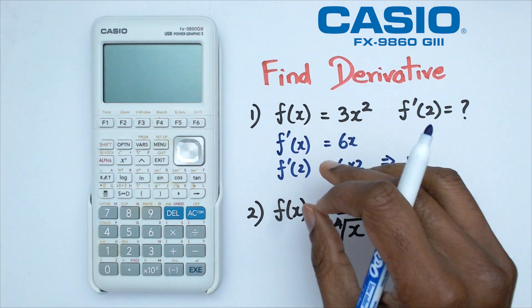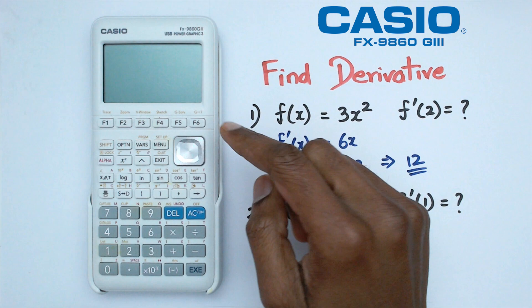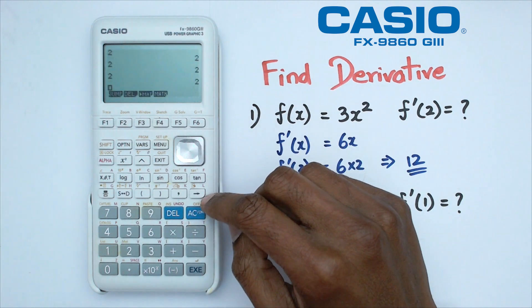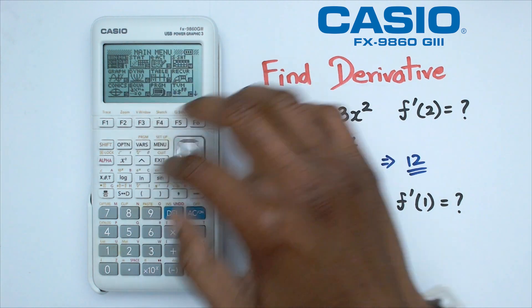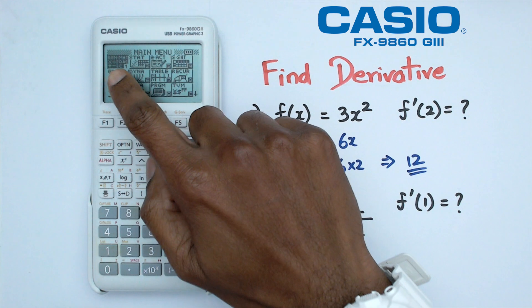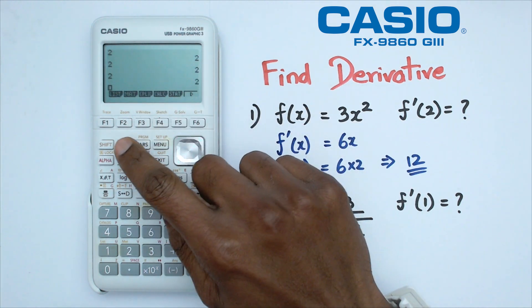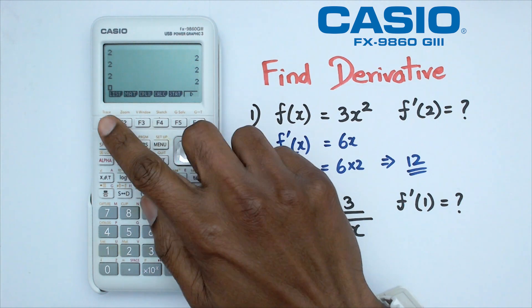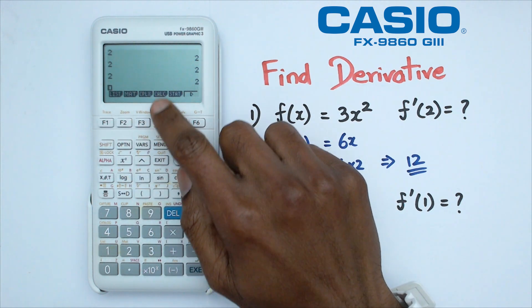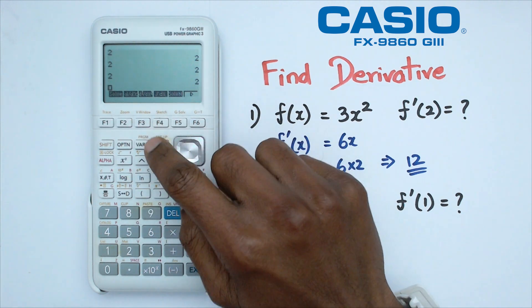But how do we do this in the calculator real quickly? So the way we're going to do this is we're going to switch on the calculator. Just go into your normal main menu and then head down to run mode. And in here, what you want to do is click on option. And when you click on option, under F4, you should see a button that says calc. We're going to click on that.